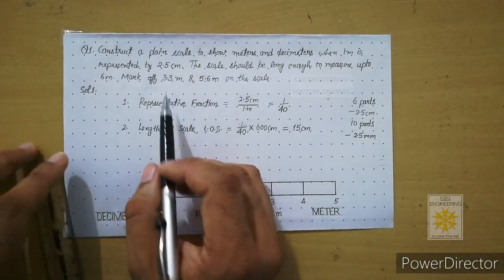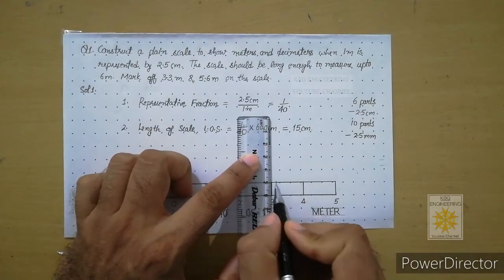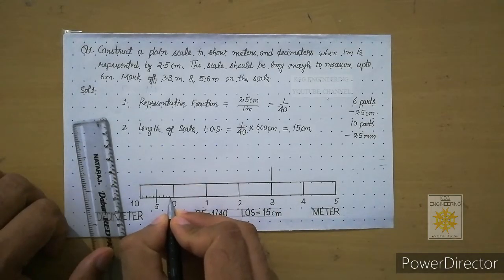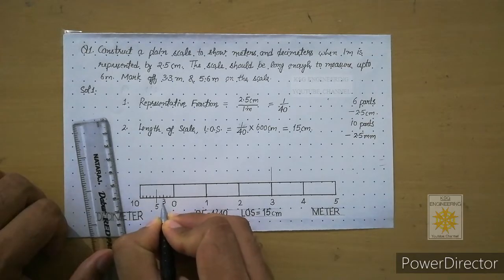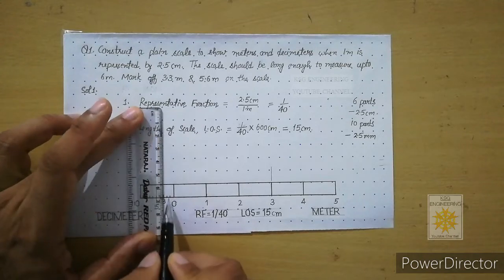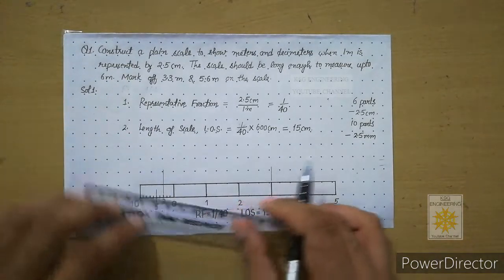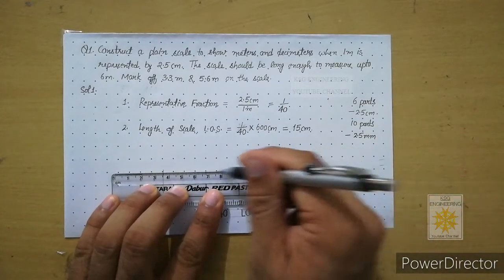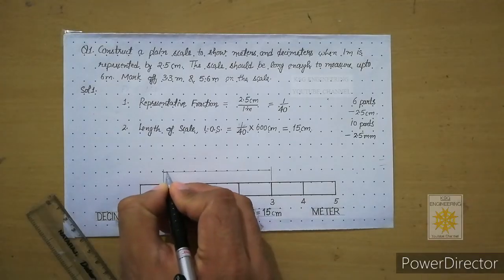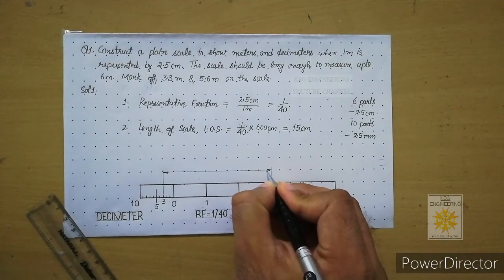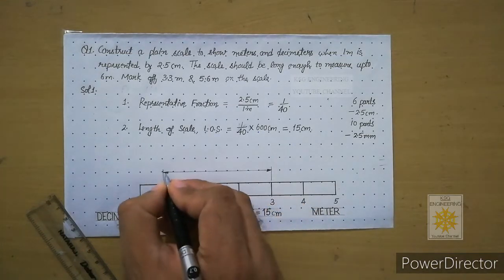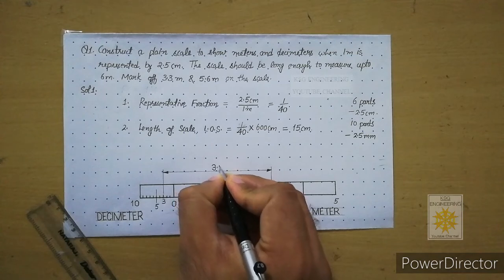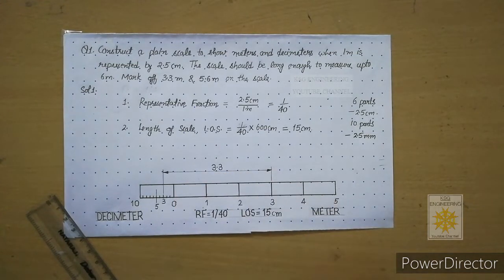Now let us answer 3.3 meters. From zero to three meters, align your scale and draw a continuous thin line leaving a one-millimeter gap. Then mark the third decimeter — one, two, three — and from that point draw another continuous thin line with a one-millimeter gap. From the object line leave around 10 millimeters and draw the dimension line with closed filled arrowheads in 3:1 ratio. On top write 3.3 in letter writing.